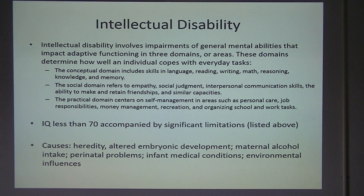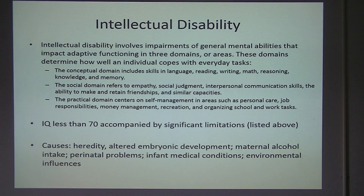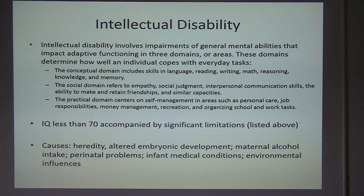The areas assessed are: conceptual — how are their reading, writing, and math skills, and can they retain memory? Then there is the social aspect — how are they getting along with others and communicating? And finally, self-management — are they able to manage their hygiene, get to work and school, and manage their money? They still look at an IQ of 70, but those other three areas are also taken into consideration.